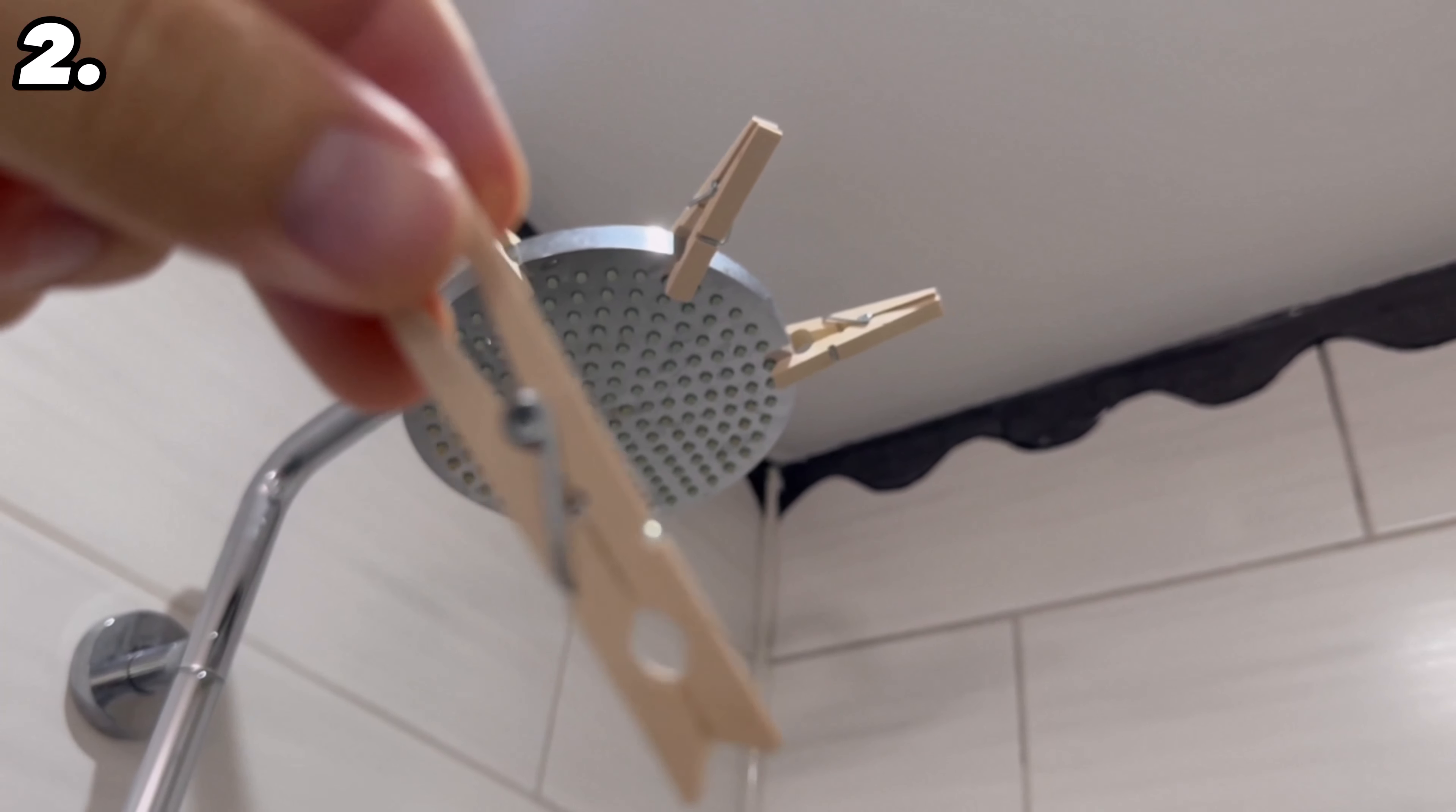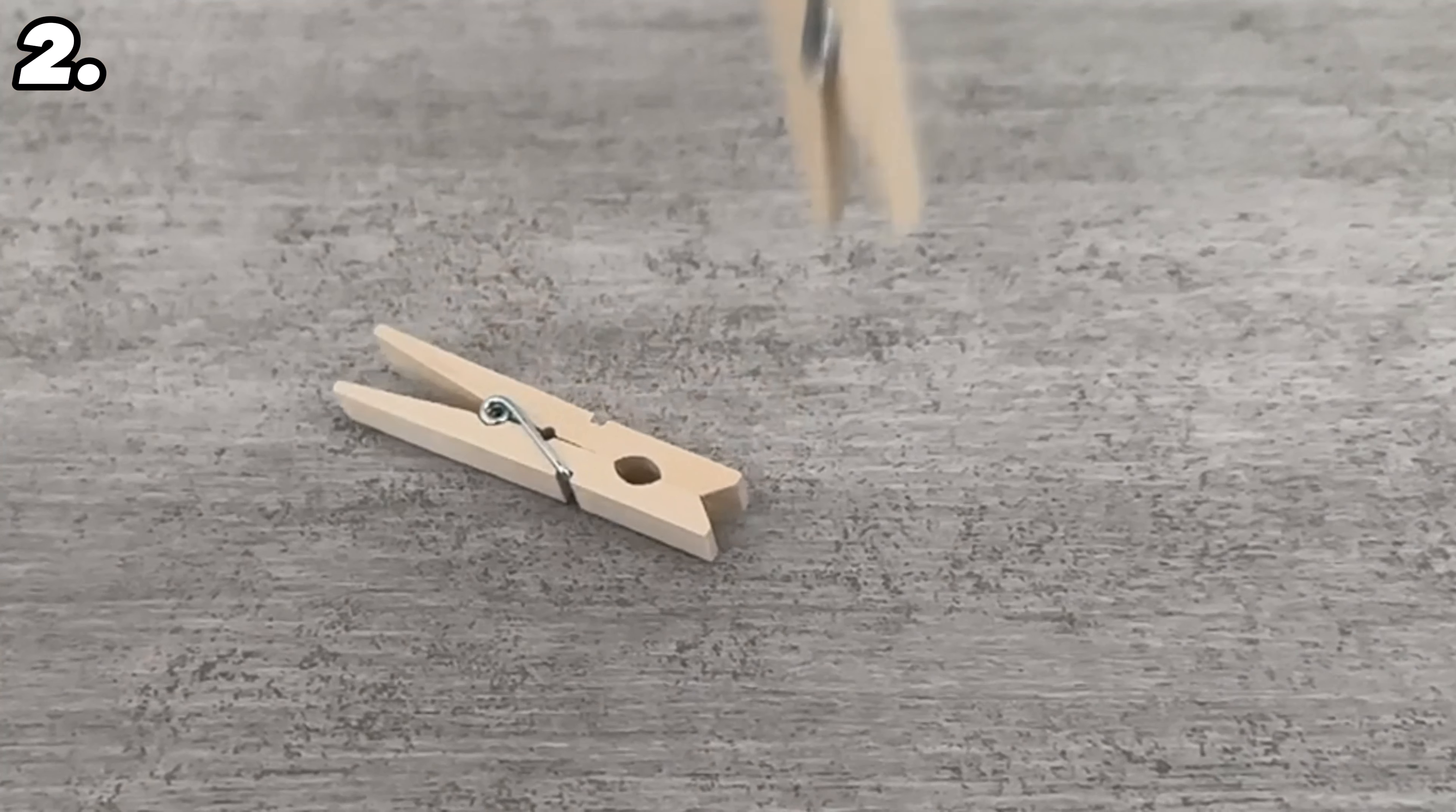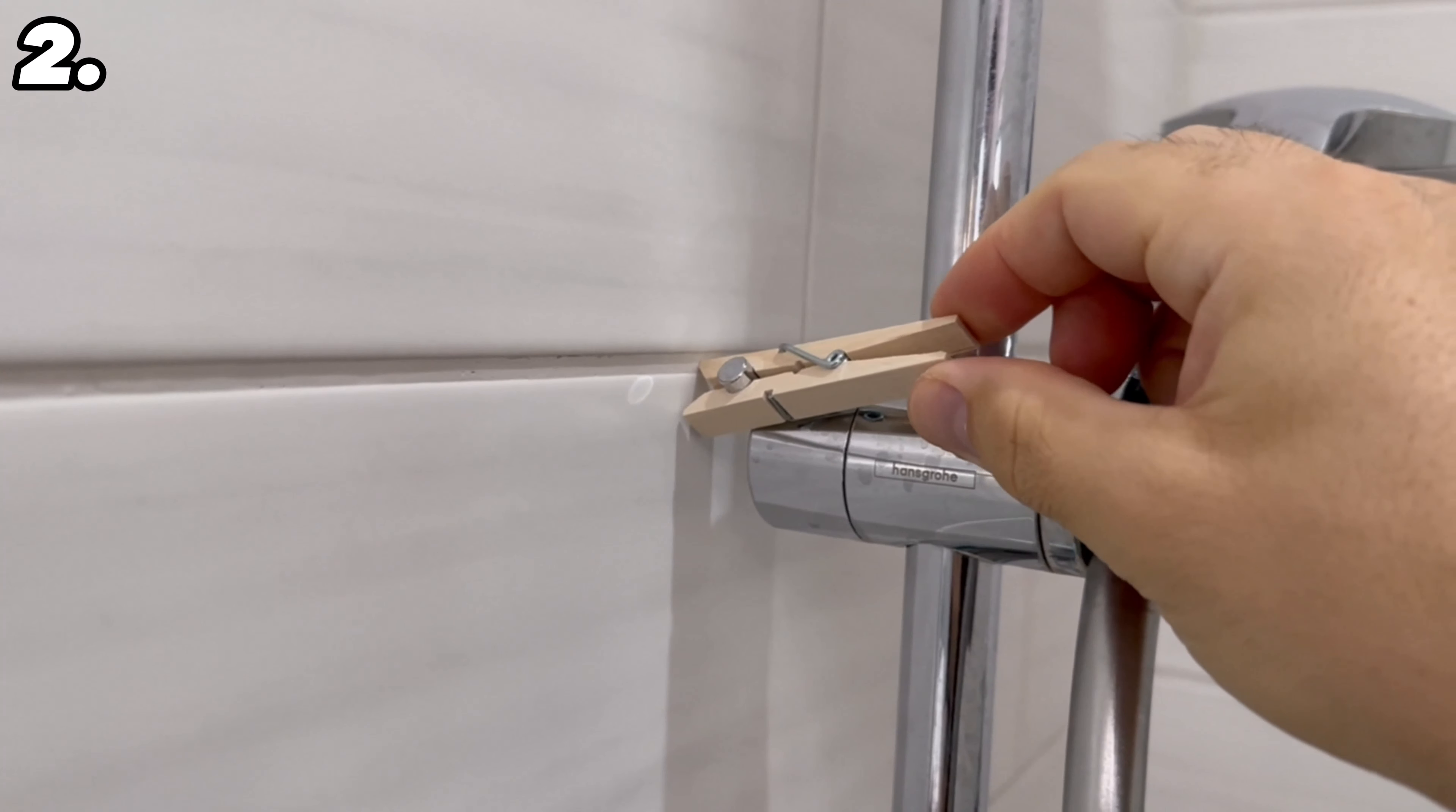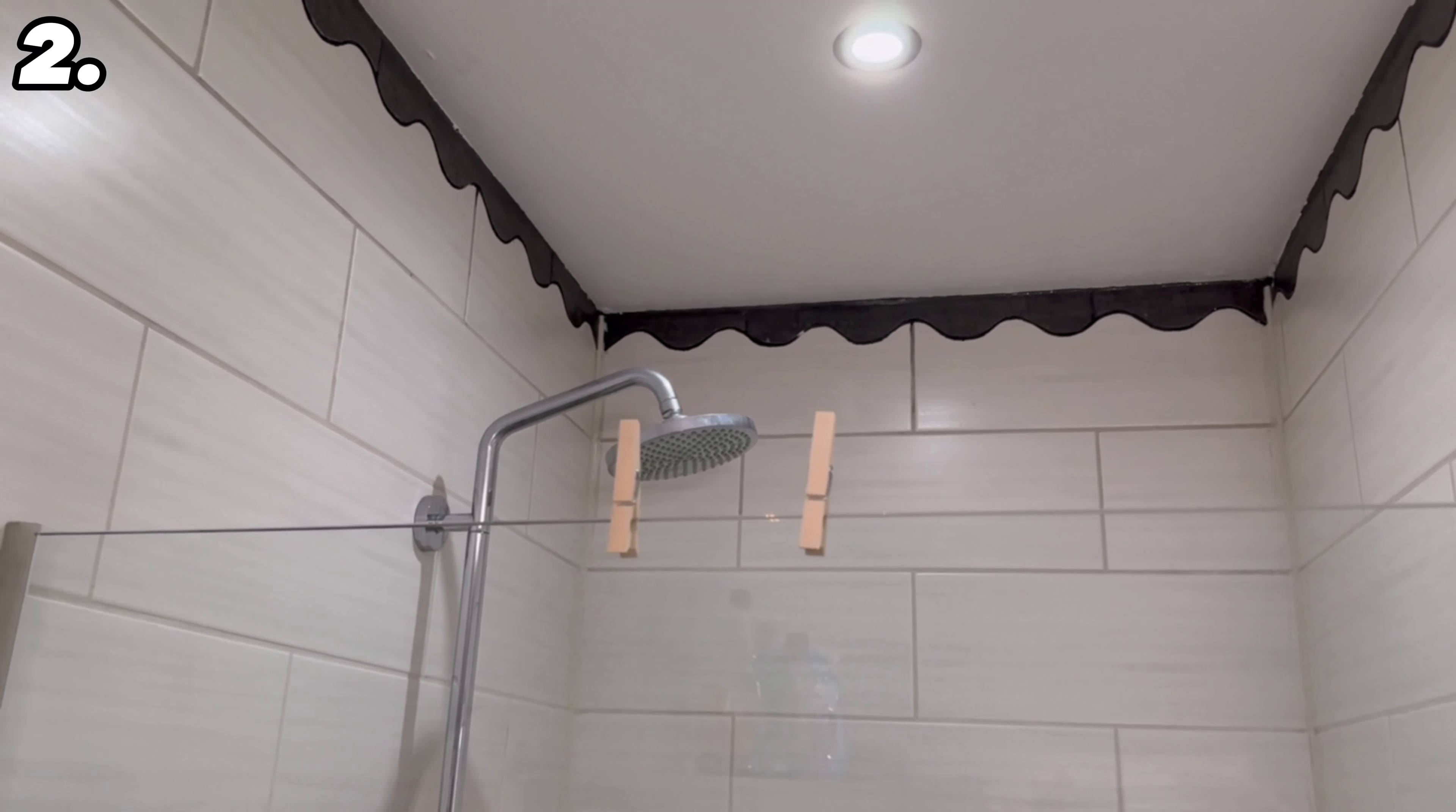If you've never thought of using clothespins in the shower, I'll show you why you should definitely do so. Before we get to why, I'll show you which places are ideal for this. It's either the shower itself, somewhere on the shower in general, such as on the shower basket or on the shower door, or if you have one, on the shower curtain.